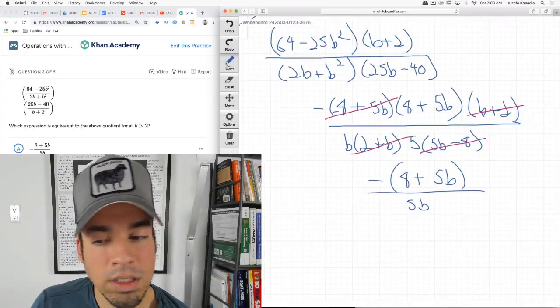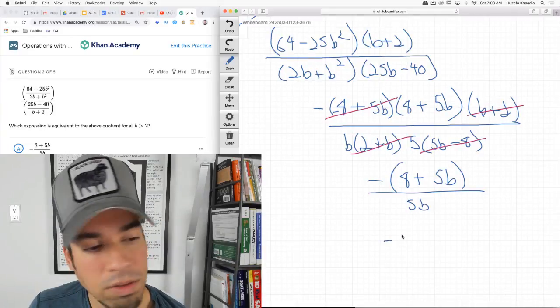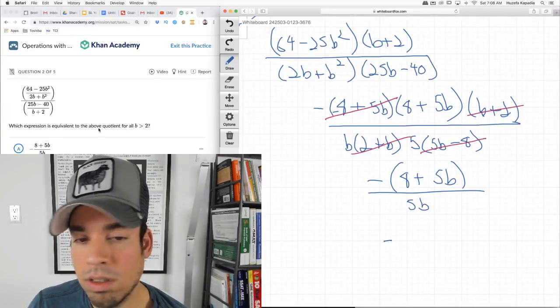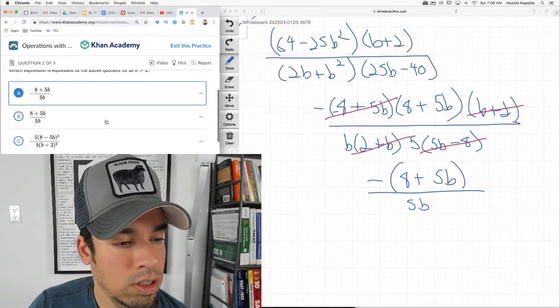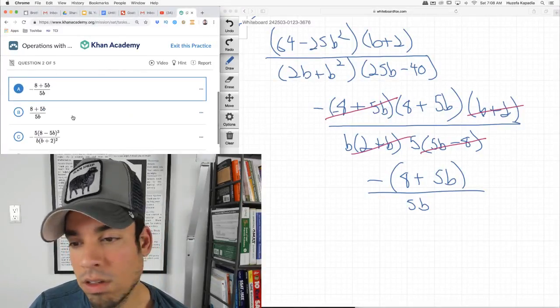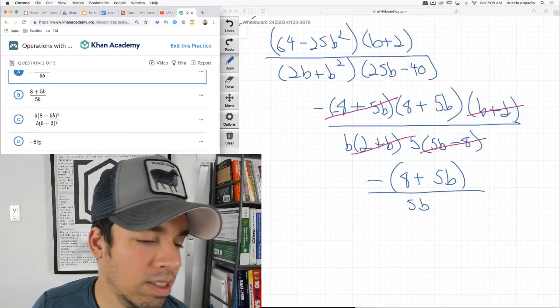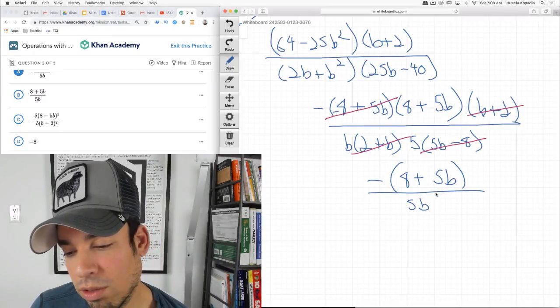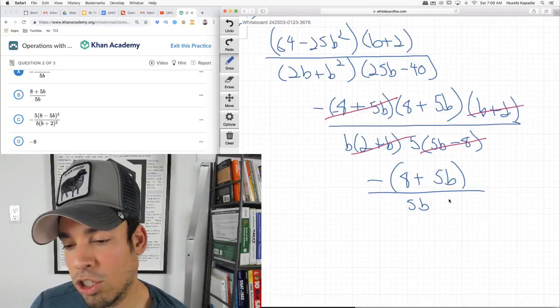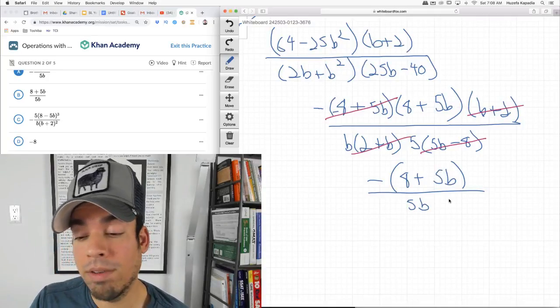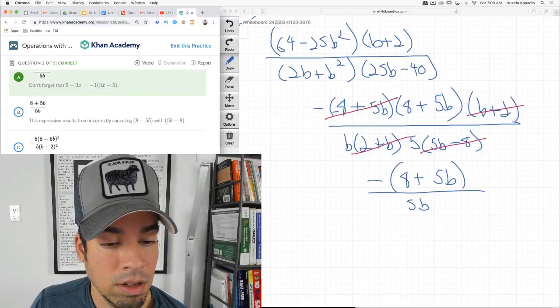And what I have left is 8 plus 5b, negative of course, over 5b in the bottom, b and 5. Then I guess that's it because I can distribute this negative in. They left it out front. This is that dangerous thing where sometimes people are like, oh I see a 5b, but that doesn't work because they're just being added. If it were 5b times 8, then I could cross it off, but I can't.